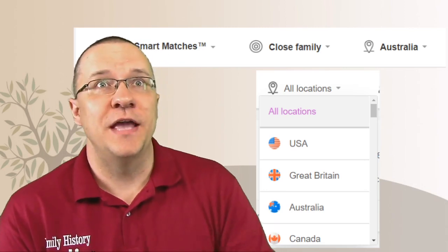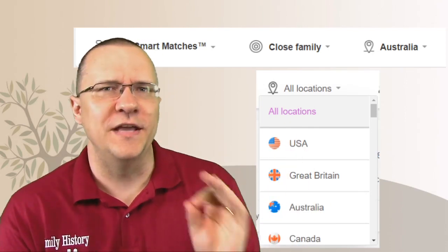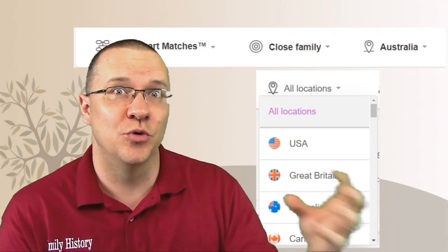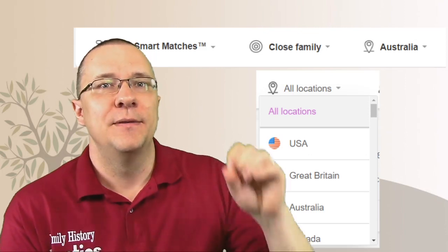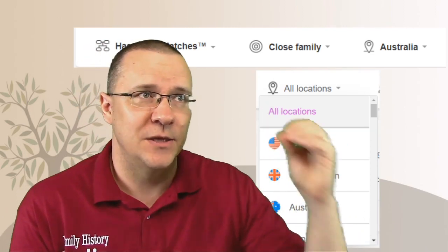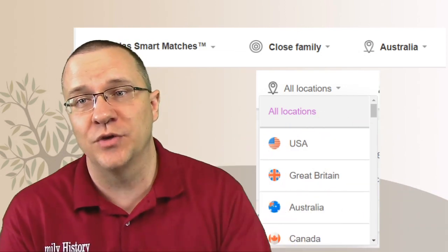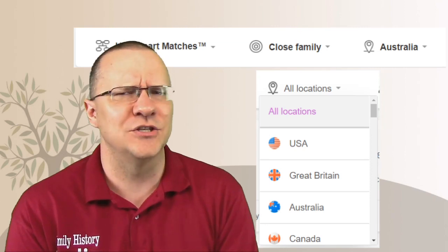Now, on MyHeritage, they don't have a map except on the individual people and then on a separate function. However, what they do have is they have the ability to look at your matches by country. So you can actually go through and select individual countries to look at those matches. Not only that, because this filter is integrated in with the other filters, you can look on something else like, let's say, smart matches and you could look for close family members and then you can choose a country. Maybe you want to look for the ones in Australia or Canada as opposed to all of the others. And so this integrated part of the feature makes this really powerful.